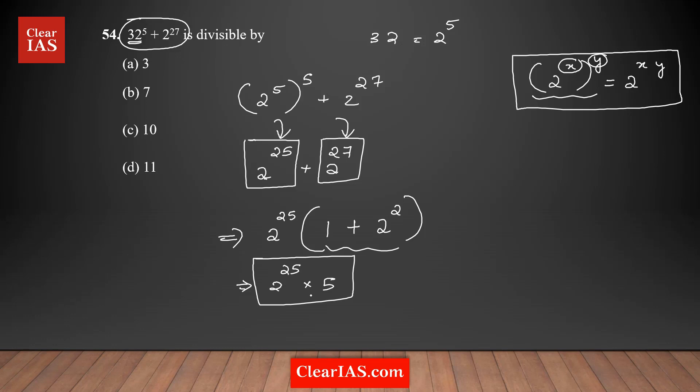Now I need to check which answer choice this is divisible by. Option A, you can eliminate because there's no 3 here. 7 also you can eliminate. 10 works—10 is nothing but 2 × 5, so there's a 2 and a 5, so it's exactly divisible. 11 also will not work. Your answer is option C, which is 10.